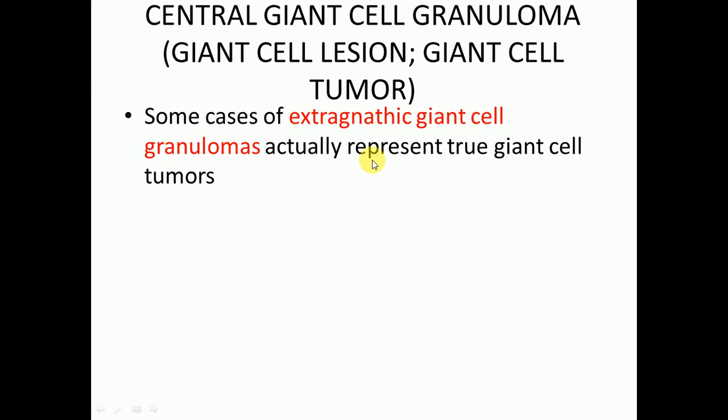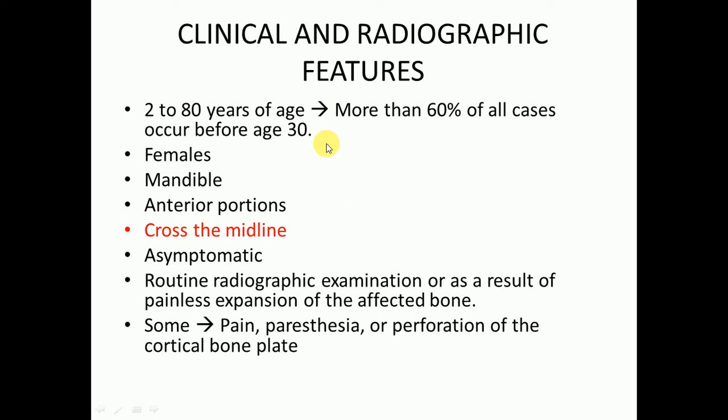Regarding clinical and radiographic features, it is most commonly found in patients who are 2 to 80 years of age, and more than 60% of all cases occur before age 30. It is more common in females and can be found in the mandible, particularly the anterior part. One characteristic feature of central giant cell granuloma is that it crosses the midline. I will show the image where you can see the lesion crossing the midline.